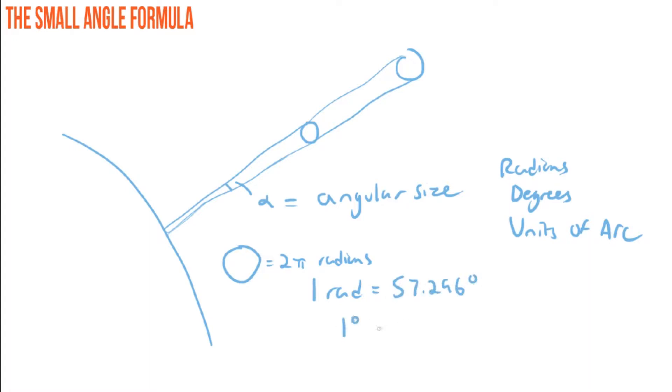One degree, and now we're going into units of arc, one degree is equal to 60 arc minutes, which is represented by this notch here. And then one arc minute is equal to 60 arc seconds. So if you wanted to go all the way from the top to the bottom, one radian is equal to 206265 arc seconds.